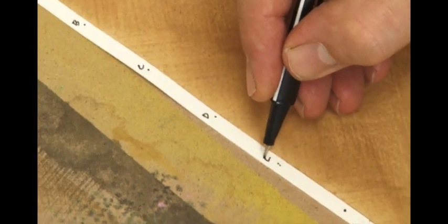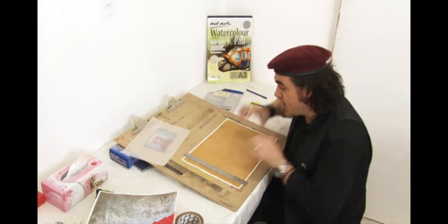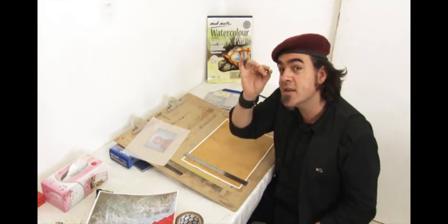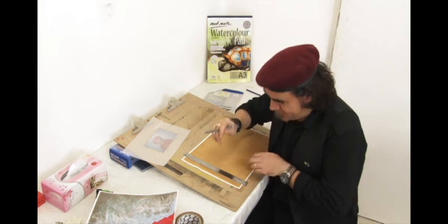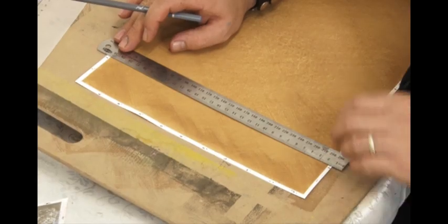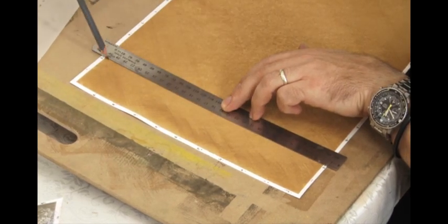So once they're numbered and lettered we need to grid up the proposed artwork and do this with a 4B pencil very softly. This is quite an important part. You'll notice I am just using the pencil's weight to make a mark.